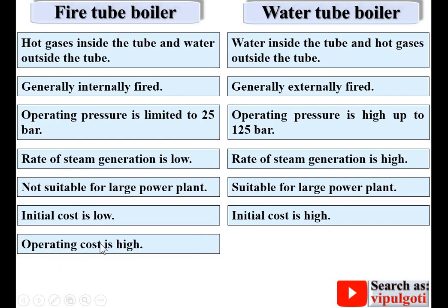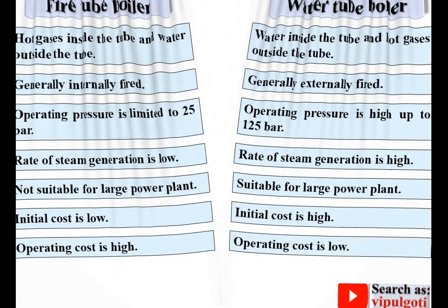Operating cost is high for fire tube boilers — obviously, where initial cost is low, operating cost is always high. For water tube boilers, initial cost is high, so obviously operating cost is low.